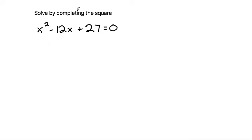This problem says to solve by completing the square. The problem is x squared minus 12x plus 27 equals 0.